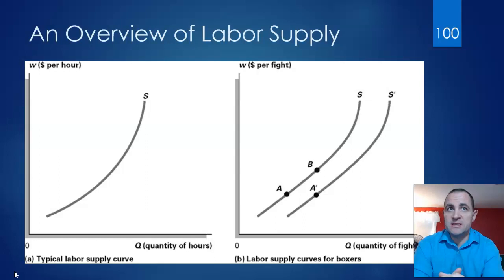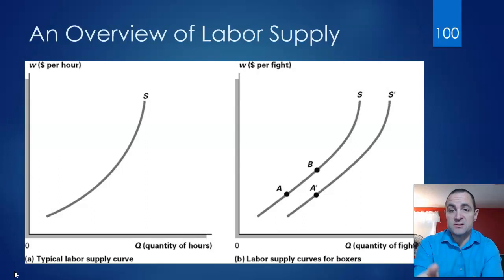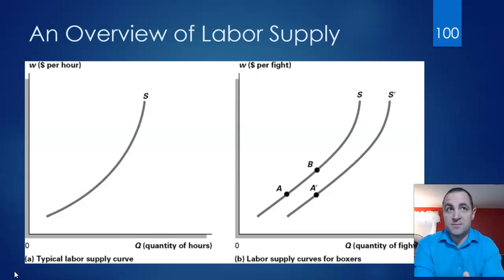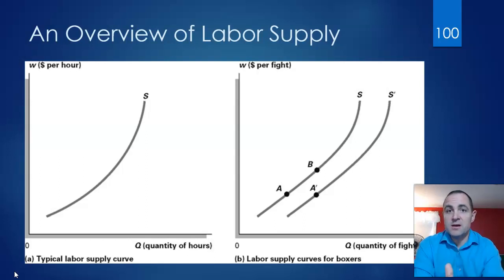The salaries paid to professional athletes in the four major North American sports were not always as high as they are now — they have risen pretty rapidly over the years. Over the last 25 years, the average salary of a major league baseball player increased more than five-fold, from about $850,000 to about $4.4 million dollars.